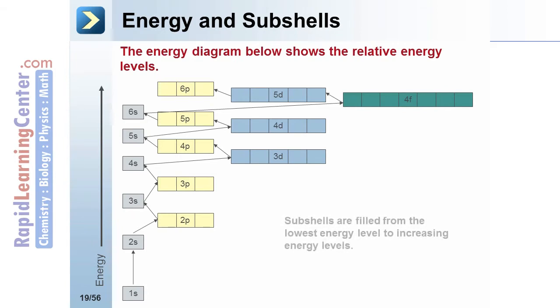Notice that orbitals do not always go in numeric order. For example, 3p is followed by 4s, which is then followed by 3d, and then 4p.